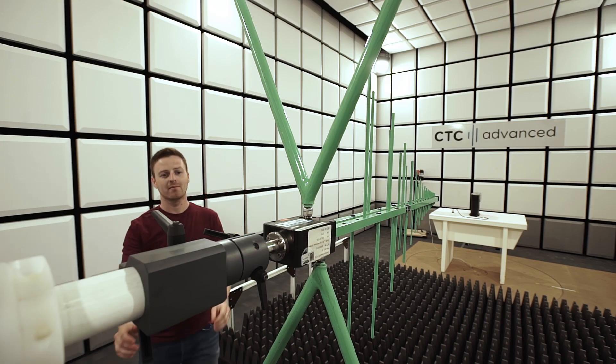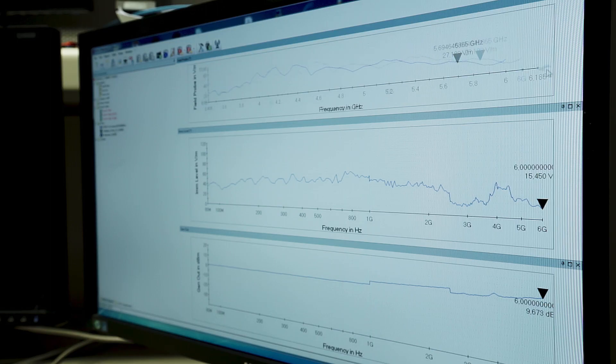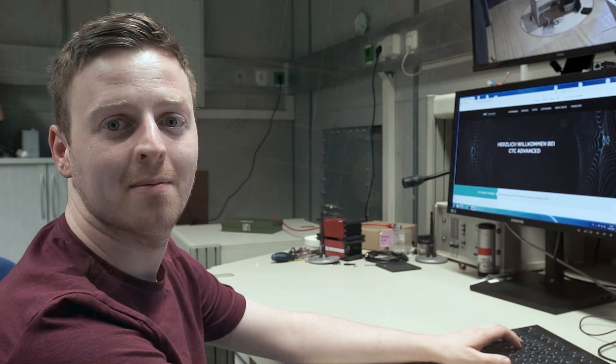We use the latest technology to test interference emissions and immunity for EMC and radio, with test field strengths of up to 200 volts per meter.